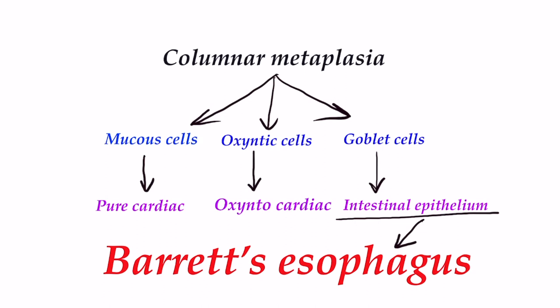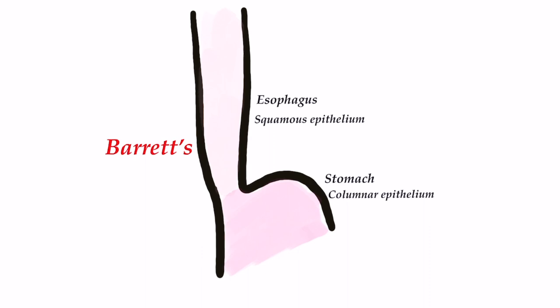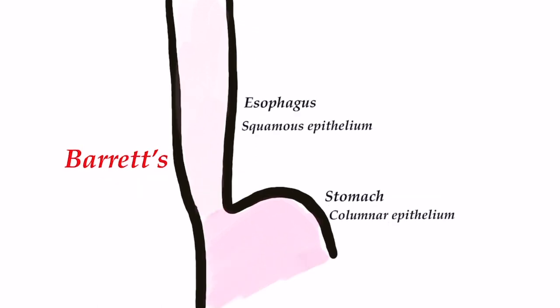Barrett's esophagus is characterized by presence of goblet cells. The diagnosis requires a combination of endoscopic and histologic findings — the columnar metaplasia must involve the tubular esophagus on endoscopy and must contain goblet cells defining intestinal metaplasia on biopsy specimens. The dogma that the distal two centimeters of the esophagus could be lined by cardiac epithelium led to the dictum that at least three centimeters of columnar-lined esophagus had to be present to establish the diagnosis of Barrett's.